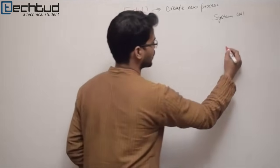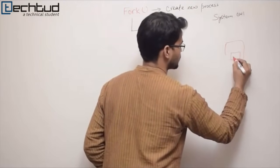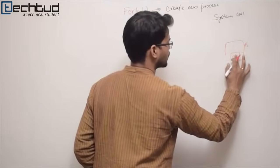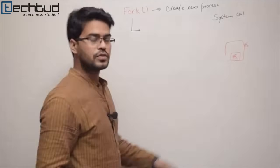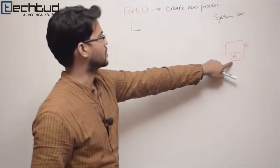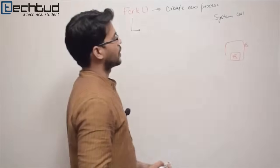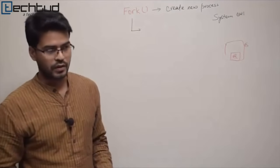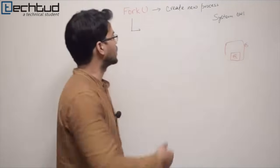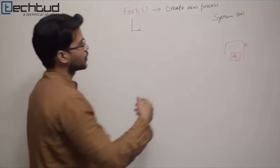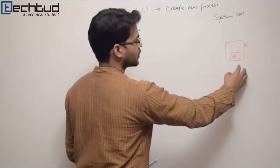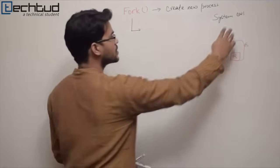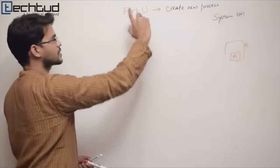In your operating system, you have the core of the OS — that is the kernel, which is an essential component. This kernel manages the services, and if a service is required — for example, a call to schedule processes — it is requested to the kernel via these system calls.